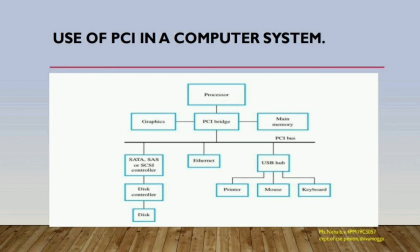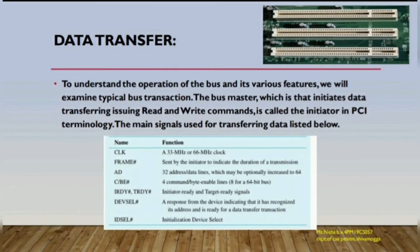To understand the operation of the bus, we examine a typical bus transaction. The bus master that initiates data transfer and issues read and write commands is called the initiator in PCI terminology. The main signals used for transferring data include CLK — a 33 MHz or 66 MHz clock — and FRAME, sent by the initiator to indicate the duration of the transmission.